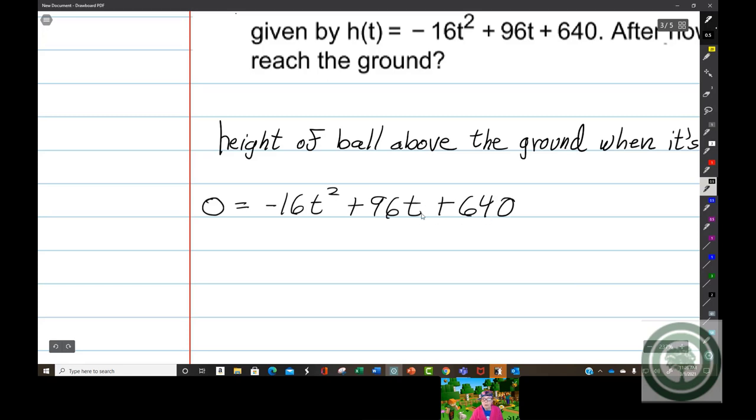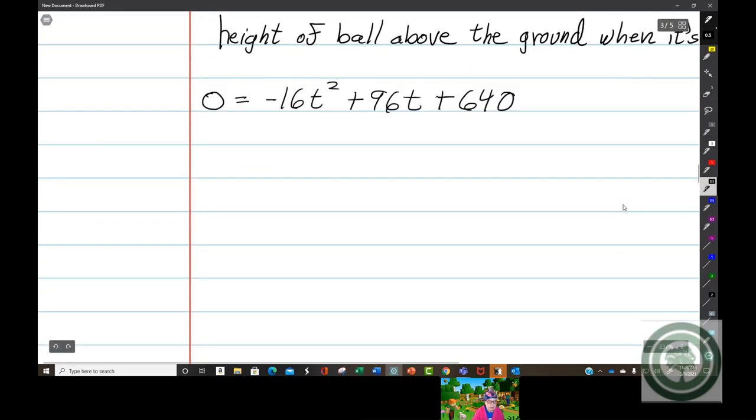So zero equals negative 16t squared plus 96t plus 640. That's why I curl my T's, because sometimes you've got a curly T right next to a plus sign. Helps me tell the difference. Now, you've got a GCF of 16 here.